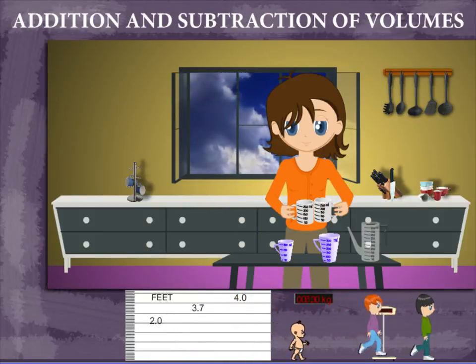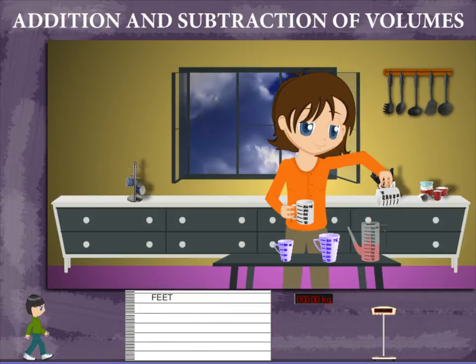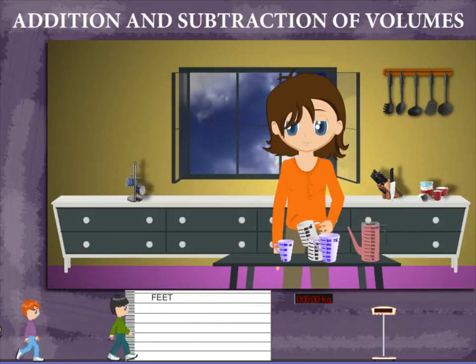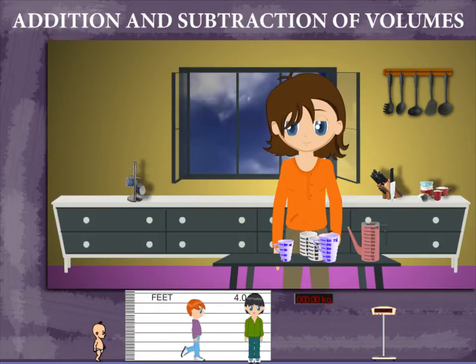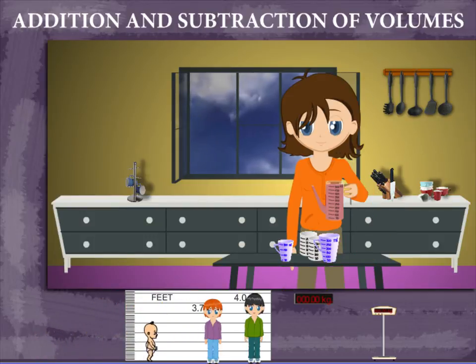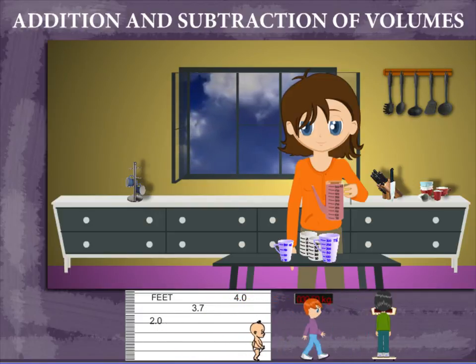How much is 250 ml and 250 ml? She pours the juice into the 500 ml kettle from both the mugs. The kettle gets filled completely. So, 250 ml plus 250 ml makes 500 ml.